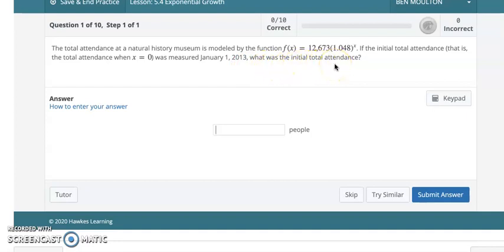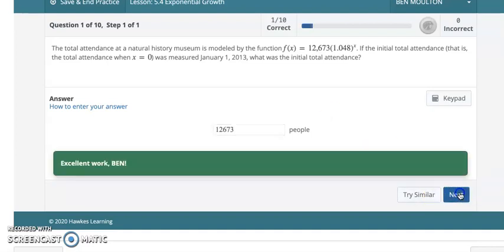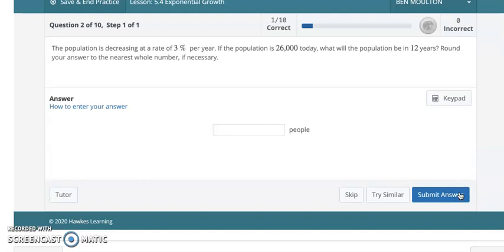So hopefully you already know what the answer is on this. Basically, it's saying what's the total initial attendance, which means plug 0 in for x up here, and anything raised to the 0 power is going to be 1. So 1.048 raised to the 0 power will be 1, and 12,673 times 1 is 12,673. That's going to be your answer on this one. Yeah, it's that easy. It won't always be this easy though.